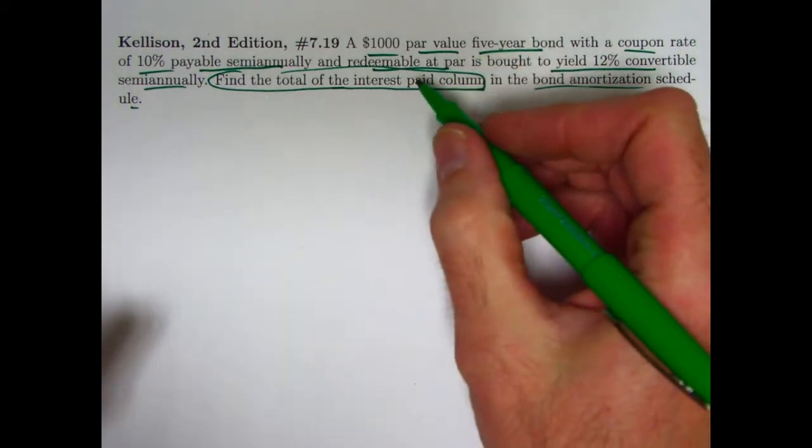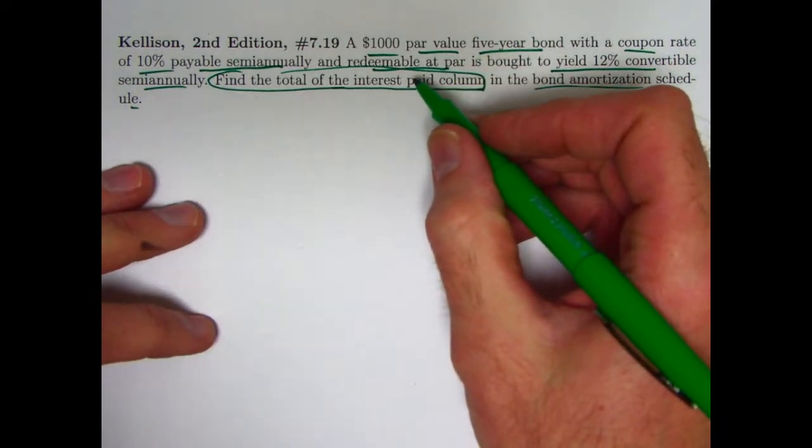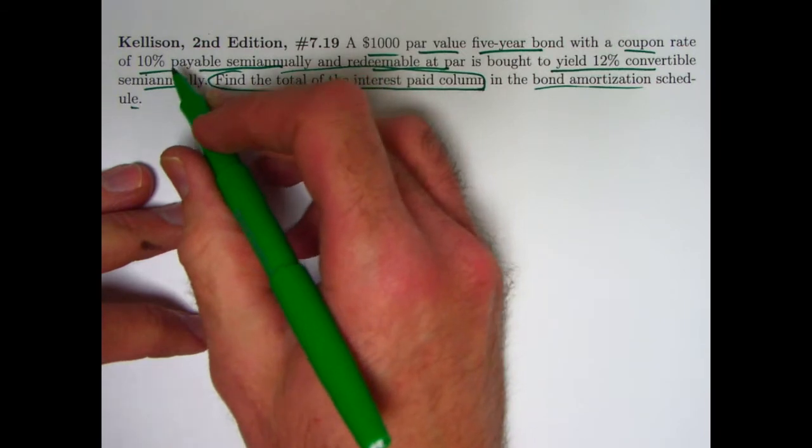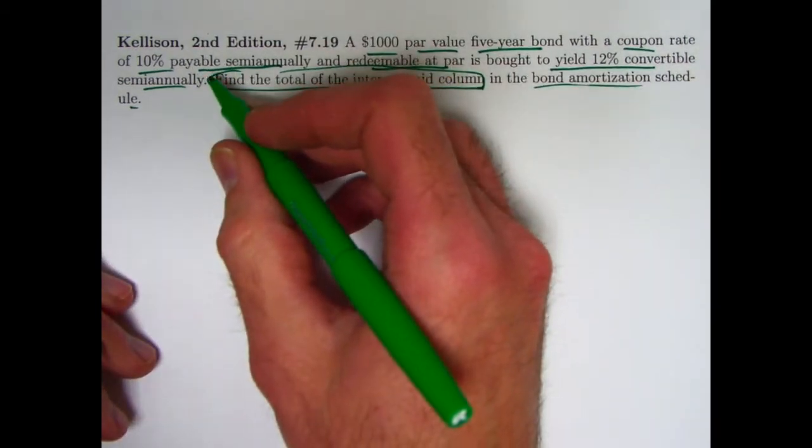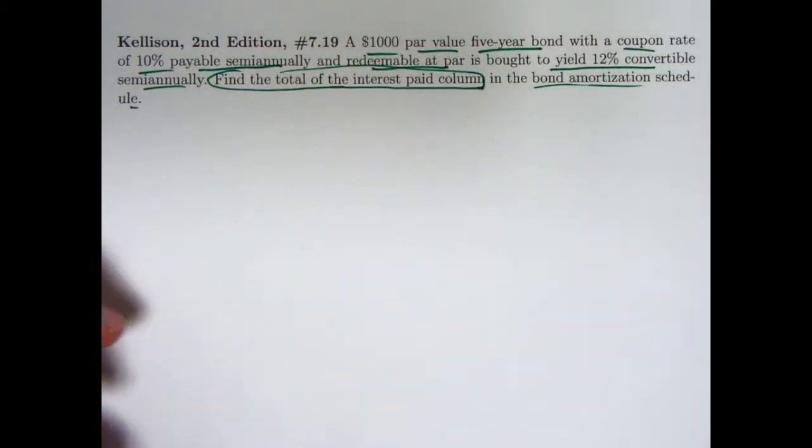Before I solve the problem, I'll also notice that when the bond is redeemable at par, I've said that if your coupon rate is lower than the yield rate as it is here, the bond will be bought at a discount. If it was the other way around, with the coupon rate being higher than the yield rate, then the bond would be bought at a premium. When the bond is bought at a premium, you are paying more than the redemption value when you buy the bond. That means that the coupon payments to you cover more than the interest that is owed to you, and that causes the book value of the bond to be written down over time.